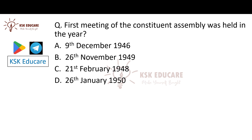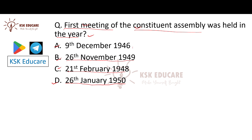The first meeting of the Constituent Assembly was held in which year? Option A is December 1946, Option B is 26 November 1949, Option C is 21 February 1948, and Option D is 26 January 1950. The correct answer is 9 December 1946.